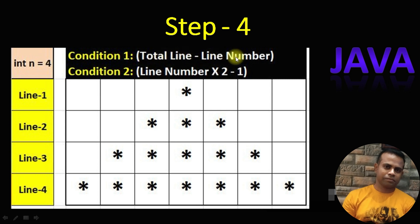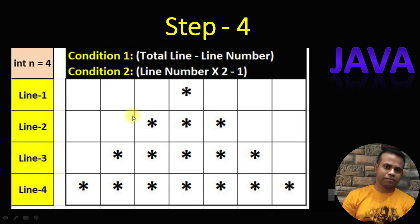The space formula is: total lines minus the current line number (n−i). If total lines is four and line number is one, then 4−1=3 spaces. Line two: 4−2=2 spaces. Line three: 4−3=1 space. Line four: 4−4=0 spaces. Using this condition, we can easily find out how many spaces to print in each line.